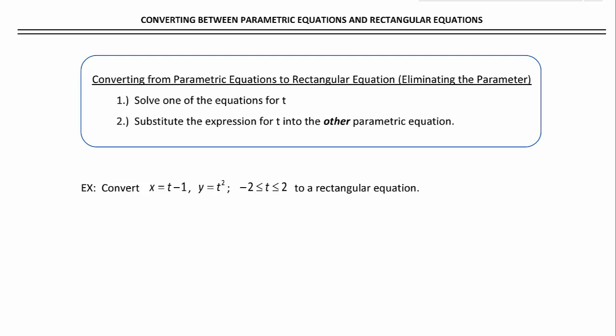Let's convert x equals t minus 1 while y equals t squared, t in between negative 2 and positive 2, into a rectangular equation.